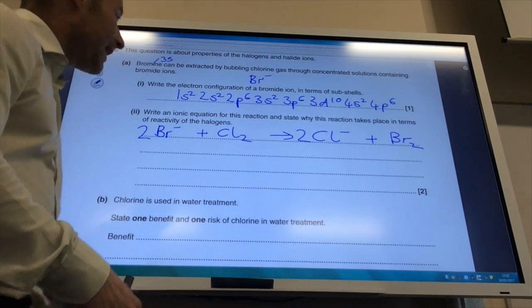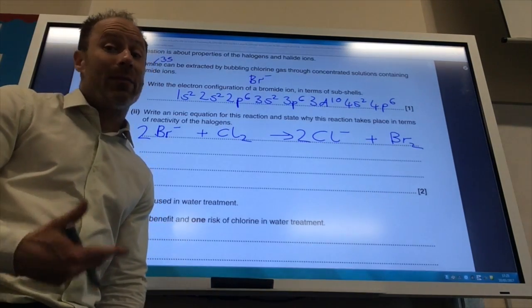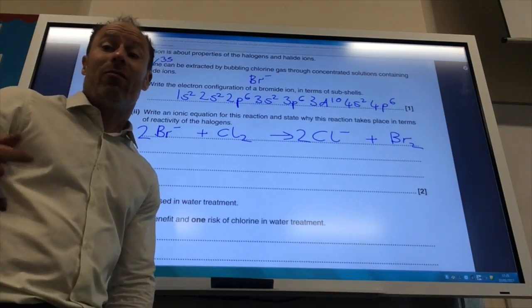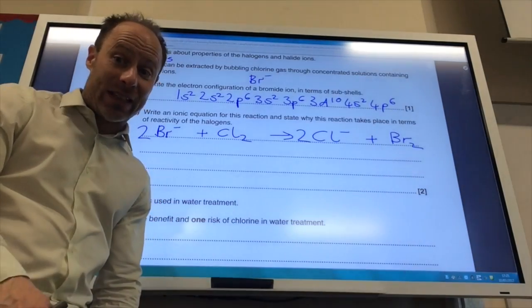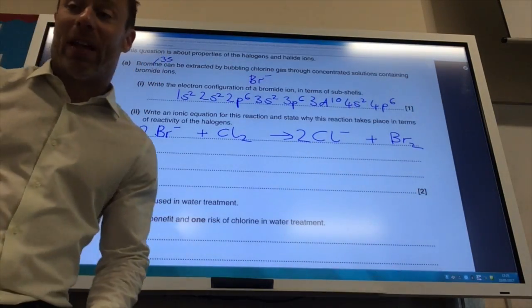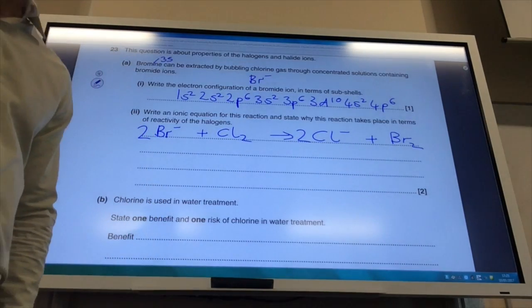Why does it take place? It takes place because chlorine is more reactive than bromine. Remember reactivity decreases down the group. So chlorine is far more reactive than bromine.